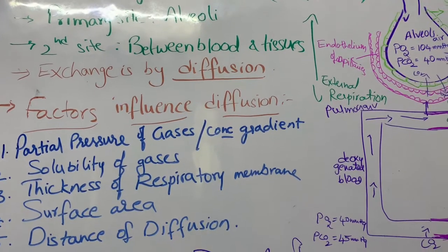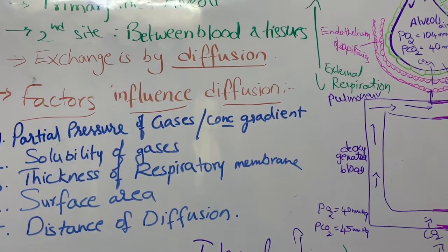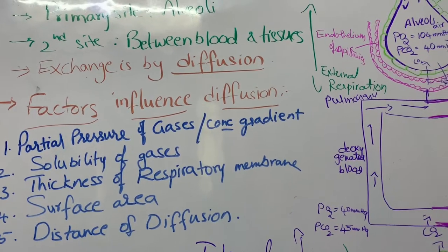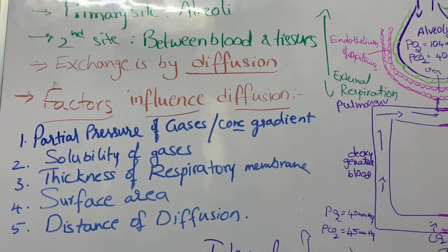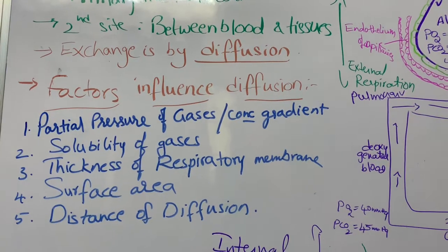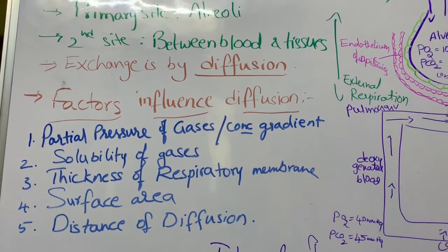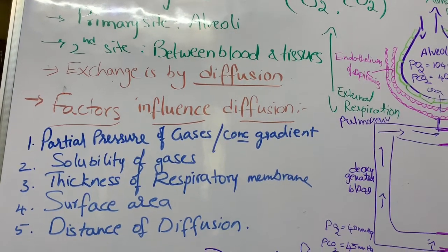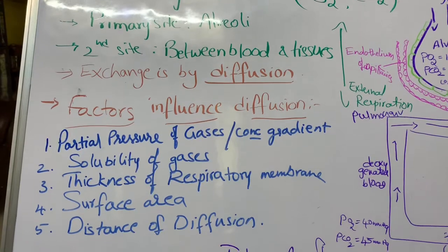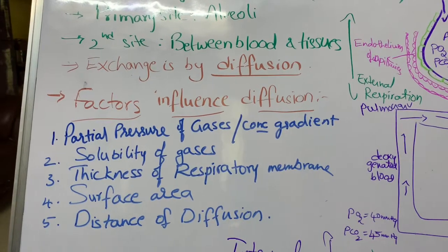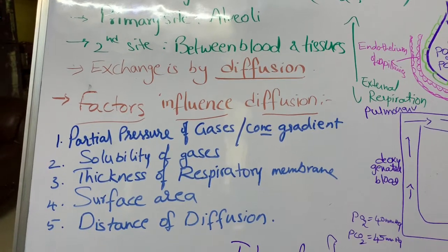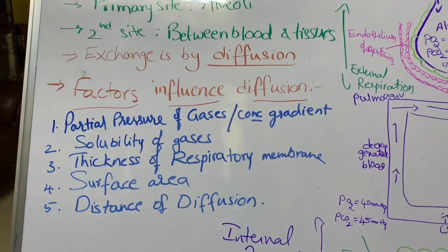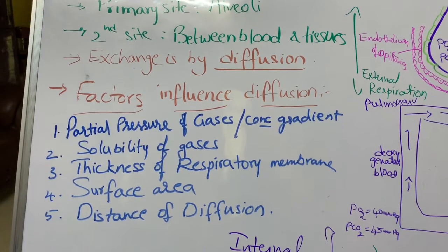Partial pressure is the pressure exerted by an individual gas in a mixture of gases. For example, the partial pressure of oxygen is the pressure exerted by oxygen molecules in the gas mixture. The atmospheric air contains different gases like nitrogen, oxygen, carbon dioxide, and helium. The total atmospheric pressure is 760 mm Hg.